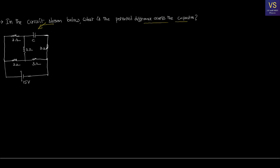To find the capacitor's potential difference, let us see how the current gets distributed. From the positive terminal of the battery, current starts and after reaching a junction, it splits. Some current goes as I1, some as I2. That I2, after coming to the next junction, would split between the branch with the capacitor. But assuming this capacitor is fully charged — in steady state — it doesn't allow any current through it. Therefore, it acts as a dead element, and no current flows through this capacitor or the 3 ohms resistance in series with it.